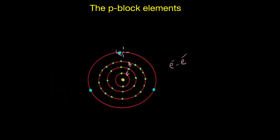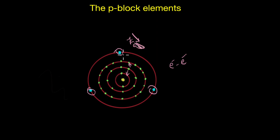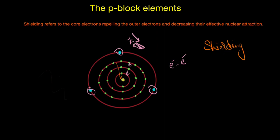Because of this, the valence electrons get pushed farther away from the nucleus and overall experience less effective nuclear charge. In other words, the inner electrons shield the outer electrons from the pull of the nucleus. This is what we call shielding — core electrons repelling the outer electrons and thereby decreasing their effective nuclear attraction.